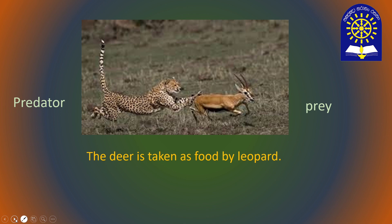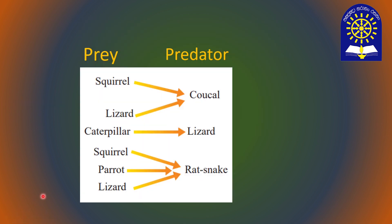Let's see some examples. Squirrel and lizard are prey for eagle. And the lizard becomes predator for caterpillar. Rat snake is the predator for squirrel, parrot and lizard. Each time we should use the arrowhead pointing to the predator or the eater.